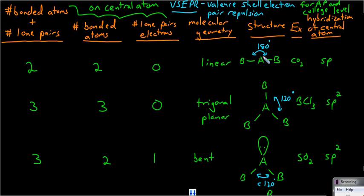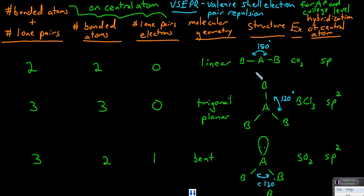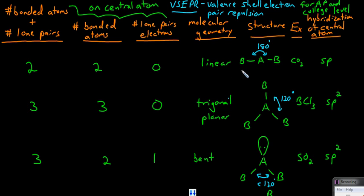Consider first a compound with a Lewis dot structure which has two atoms bound to the central atom and no lone pairs on the central atom — two bonded atoms and zero lone pairs. These total of two things around the central atom will spread out from each other as much as possible, giving this linear shape where these bonds are as far as possible from each other.